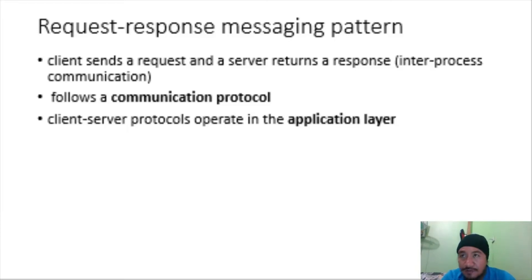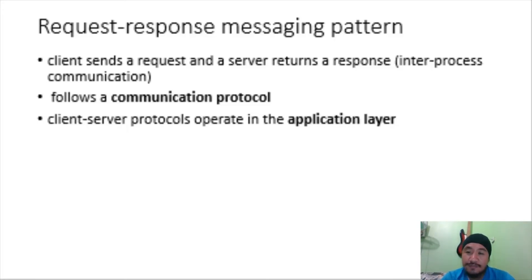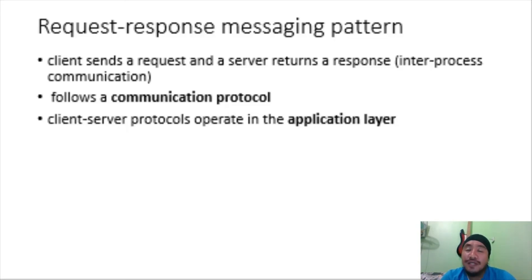To communicate, computers must have a common language and they must follow rules so that both the client and server know what to expect. This language and rules of communication are defined in a communication protocol. Client-server protocols operate in the application layer, which is an abstraction layer that specifies the shared communication protocols and interface methods used by hosts in a communication network.